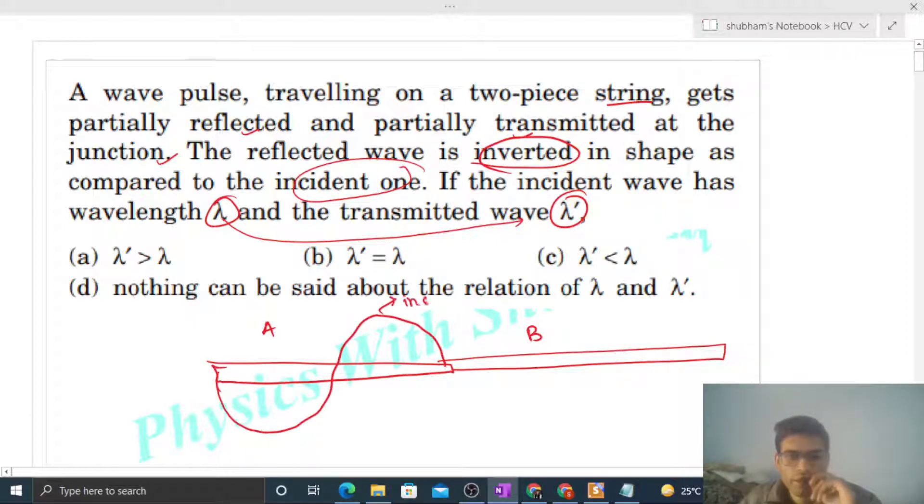And yeh aapke paas junction hai. And junction pe kya hota hai ki yeh jo wave hai, partially transmitted ho jayega and partially reflected ho jayega. And jo reflected wave hai, that is inverted.